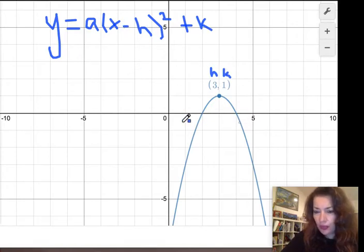Now we can choose any point on this graph to find our a value. For example, if we choose this point, we will get the same a value, which is the point right here of 2, 0. So the point 2, 0 is on the graph.